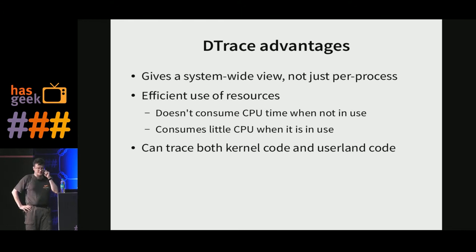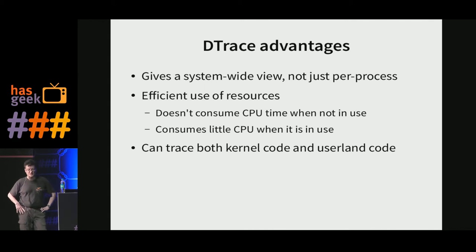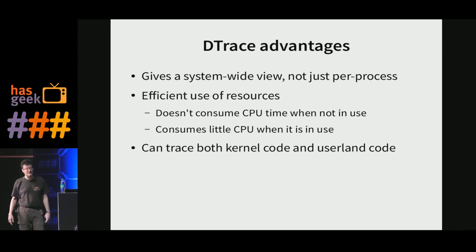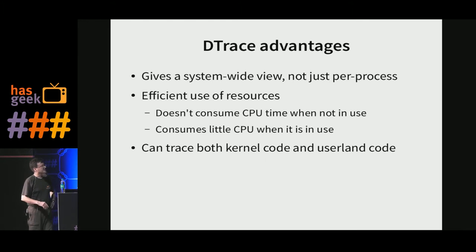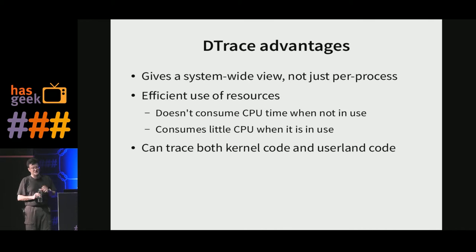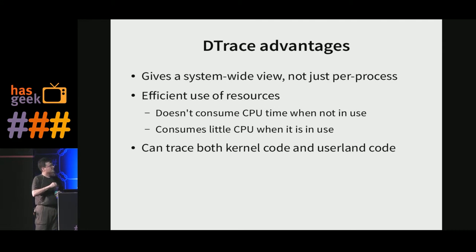It's very efficient. Unlike some other tracing tools like strace — strace is great, but strace slows down the program that it's tracing. Strace works by basically stopping the program and starting it again, catching each time it calls a system call, which can slow the program down significantly. DTrace doesn't do that. In fact, when you're not using it, it consumes zero CPU time. When you do use it, it consumes very little CPU time, just enough to grab some information. And crucially, differently from other tracing tools, it traces in both the kernel and in userland.